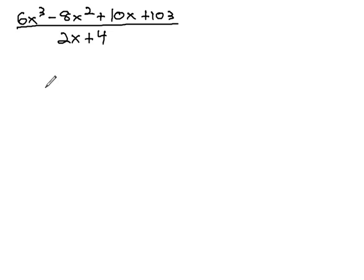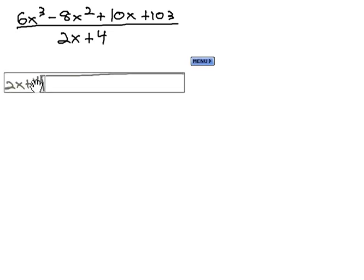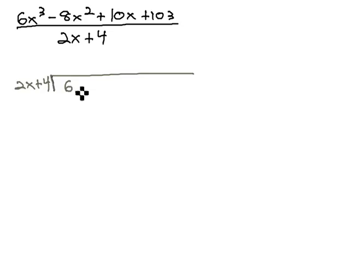First, we need to set up our long division problem, putting the 2x plus 4 out front. Didn't quite leave enough space. There we go. And the 6x cubed minus 8x squared plus 10x plus 103 inside the division bar.